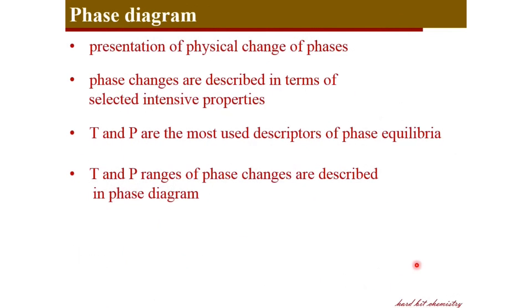Now we move on to the phase diagram. A phase diagram is a graphical representation of the physical changes of phases, described in terms of selected intensive properties. Normally we use temperature and pressure as the intensive properties to describe phase transitions, and we will see detailed examples of phase diagrams soon.